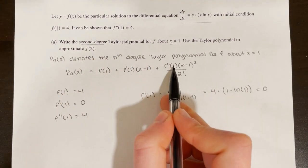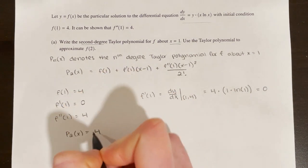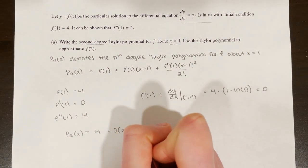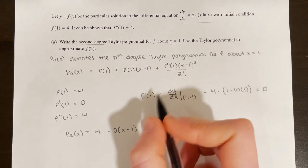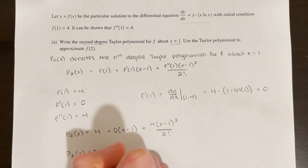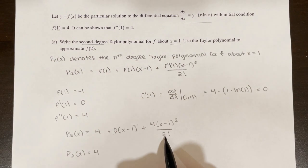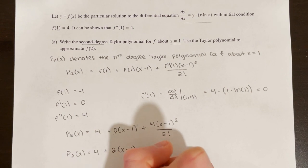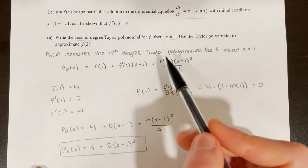Now that we have all three values, p sub 2 of x equals 4 plus 0 times x minus 1 plus 4 times x minus 1 squared over 2 factorial. Even though the coefficient is 0, we write it to show the process. Simplifying: p sub 2 of x equals 4 plus 2 times x minus 1 squared. That is the second degree Taylor polynomial for f about x equals 1.